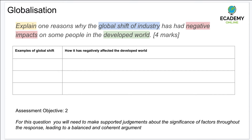First, write down the question. Then note down this table — you might want to type it out or draw it by hand. On the left-hand side, identify some examples of global shift, and on the right-hand side, write down examples of how those specific things may have negatively affected the developed world.